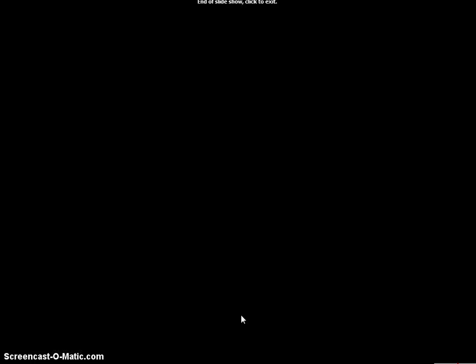What you should know at the end of this lecture is why the government allows some monopolies to function, what the two basic types of regulation are, what they look like on a graph, and what the pros and cons of each are. We just reviewed those on the two previous graphs, so go back and look at those again if you're confused, and make sure you write down any questions so we can discuss them in class.